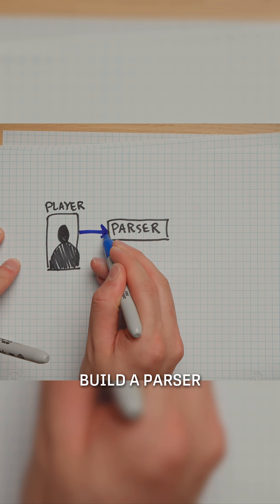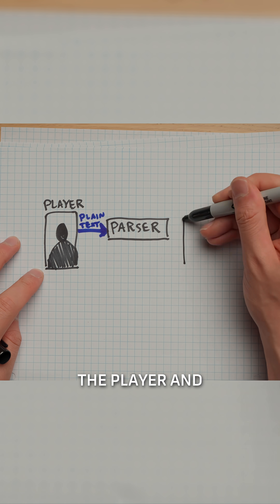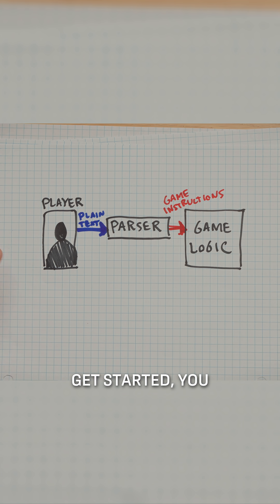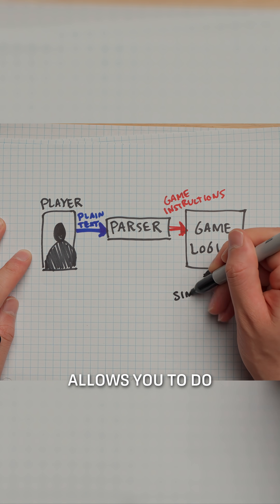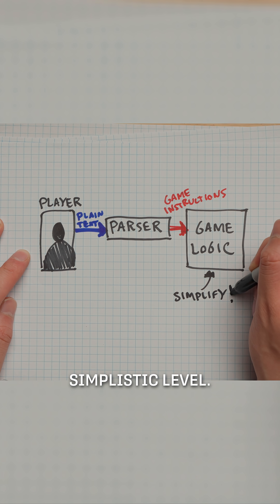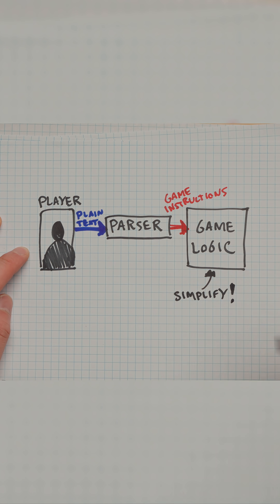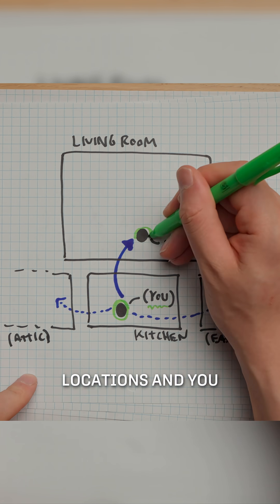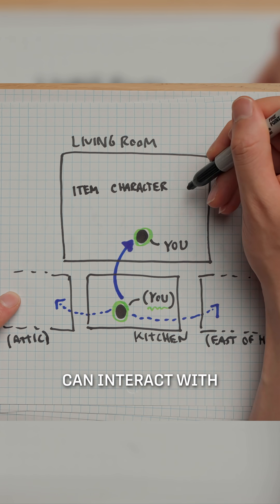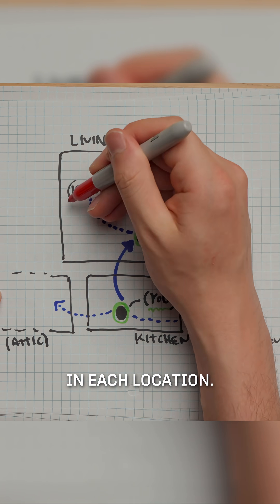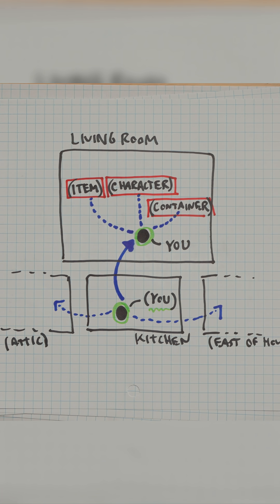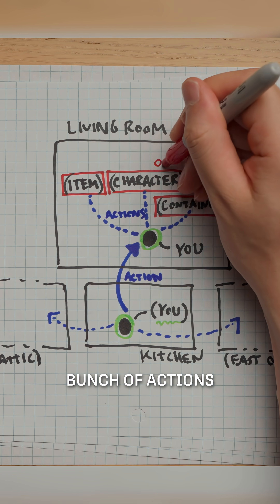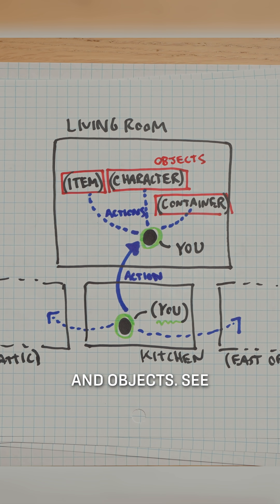Your task is to build a parser that sits between the player and the game logic and connects the two together. To get started, you need to understand what this game actually allows you to do on its most simplistic level. Generally, Zork lets you do two things: you can move to different locations, and you can interact with the various things that are in each location. To simplify it even further, the entire gameplay is really just a bunch of actions and objects.